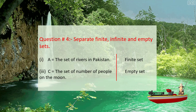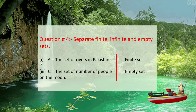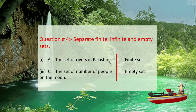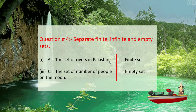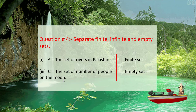Question number 4: separate finite, infinite, and empty sets. The first part — set A is the set of rivers in Pakistan. As you know, there are five rivers in Pakistan, so this is a finite set. The third part — set C is the set of number of people on the moon. Since it is not possible to live on the moon, this is an empty set.